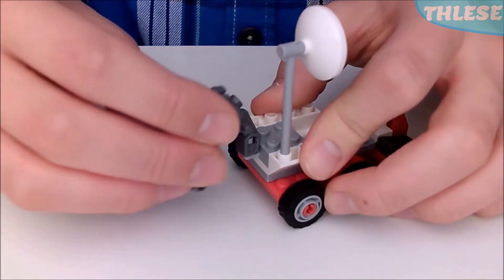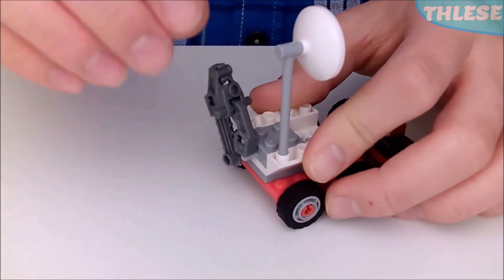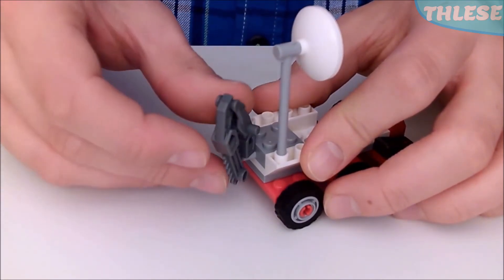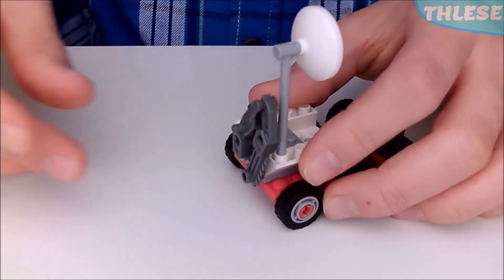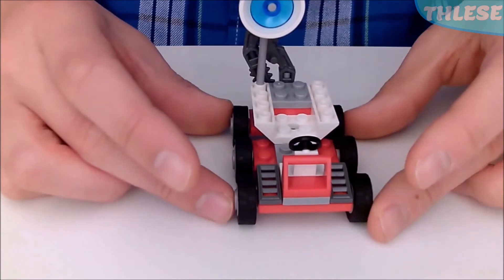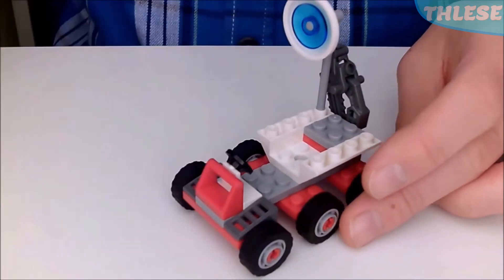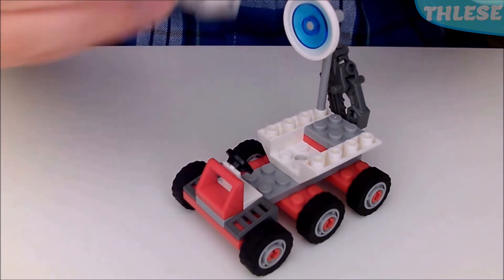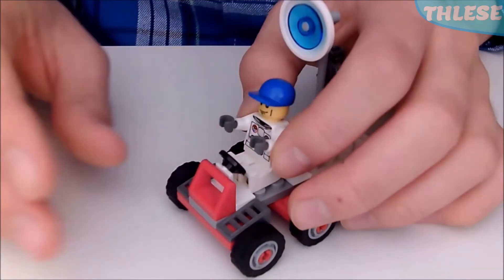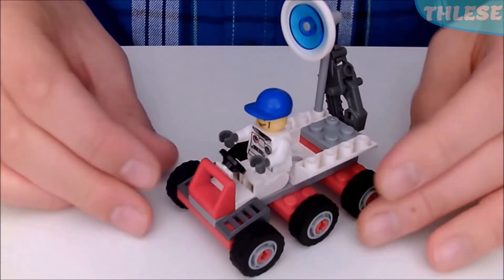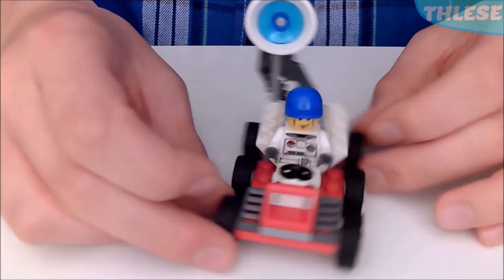This is the moon buggy, so it goes on the moon. It's based on those kind of moon buggies that go on the moon. And it does fit a minifigure in, so we can put our spaceman friend over here, reaching forward for the steering wheel. And that's the moon buggy.